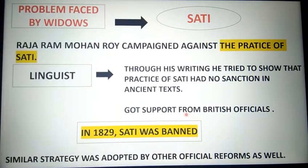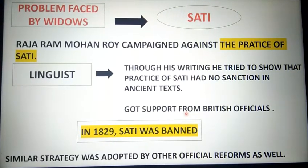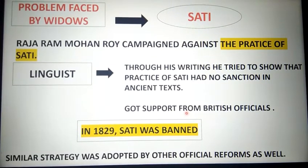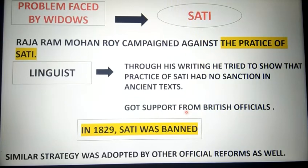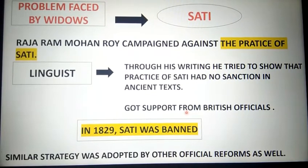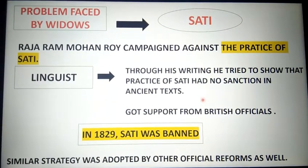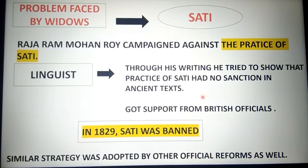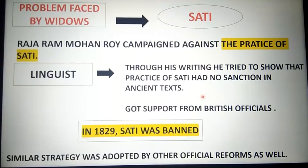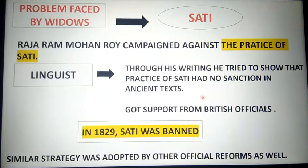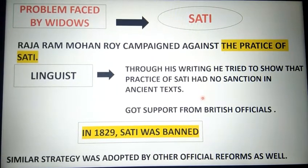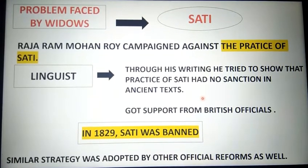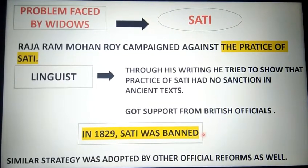As I told you about the sati system, it was a very common problem faced by all widows — women whose husbands had expired. So Raja Ram Mohan Roy campaigned that this practice of sati should be banned. He was a linguist — someone who knew different languages — and through his writing he spread awareness among people. He argued that the practice of sati had no sanction in the ancient texts, and he got the support of British officials on this issue.